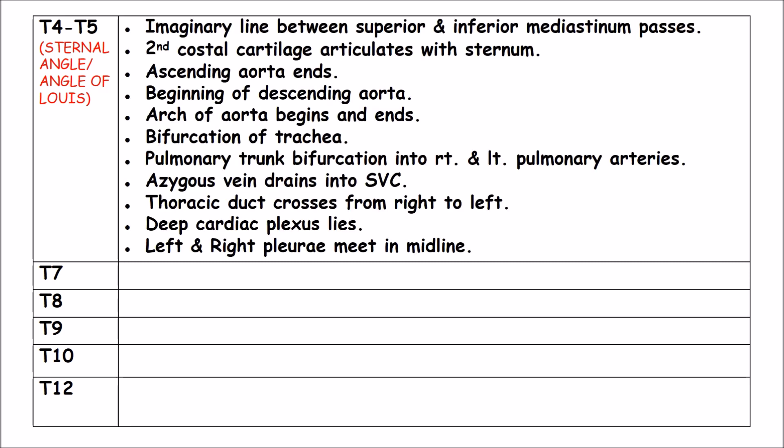T4-T5: The sternal angle, or angle of Louis. The imaginary line between the superior and inferior mediastinum passes here. The second costal cartilage articulates with the sternum. The ascending aorta ends and the descending aorta begins. The arch of the aorta begins and ends. Bifurcation of the trachea occurs. The pulmonary trunk bifurcates into right and left pulmonary arteries. The azygous vein drains into the superior vena cava. The thoracic duct crosses from right to left. The deep cardiac plexus lies here. The right and left pleura meet in the midline.